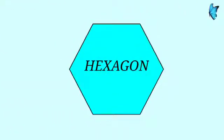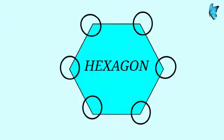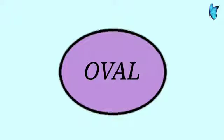Next we have a hexagon. A hexagon has six sides and six corners. Children, next we have an oval. An oval has no side and no corner.